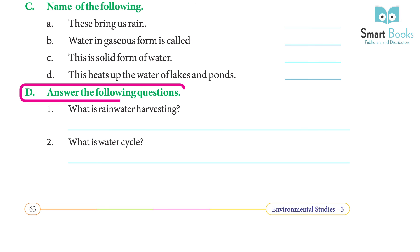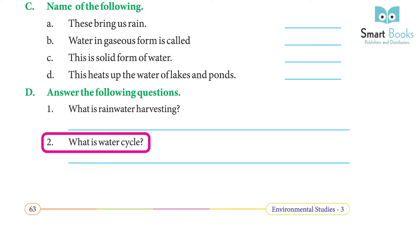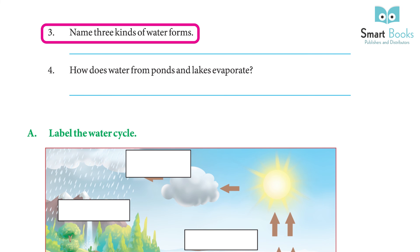Answer the following questions: (1) What is rainwater harvesting? Rainwater harvesting is the process of collecting and storing rainwater that falls on roofs, parks, roads, and other open areas. (2) What is the water cycle? The water cycle is a continuous natural process in which water changes to water vapor and then back to water.